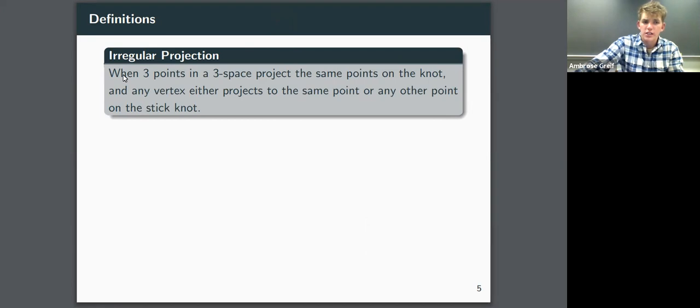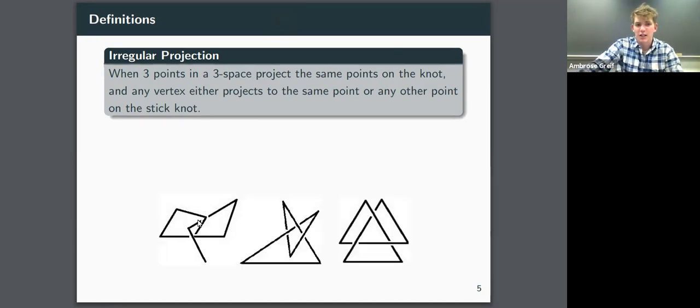Another type of projection is called an irregular projection, which is when three points in the three space project the same points on the knot, and any vertex either projects to the same point or any other point on the stick knot. And this is just a complicated way of saying that this projection right here is irregular because it has been constructed in such a way that part of the knot is not visible to the viewer. This other part that crosses over it obstructs it from the view. So we tend to avoid these types of projections since they can be quite deceptive in how they appear.